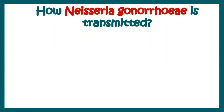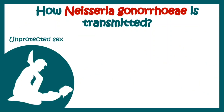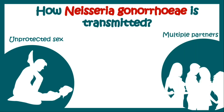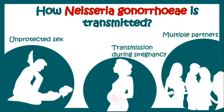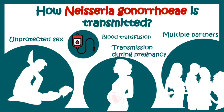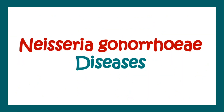Now how is Neisseria transmitted? Transmission occurs through unprotected sexual intercourse, having multiple sexual partners, and it can also occur from mother to fetus during pregnancy, or it may get transmitted during blood transfusion.